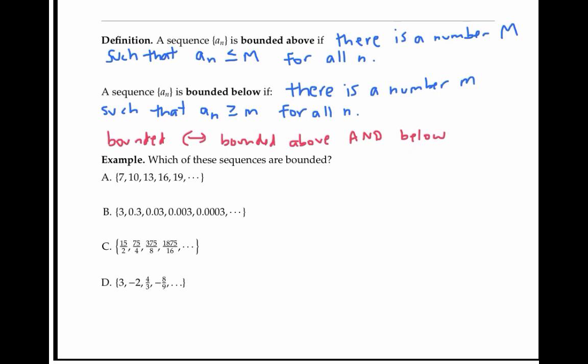The first sequence here is bounded below by seven, since all terms are bigger than or equal to seven. Of course, it's also bounded below by six or negative five — there are infinitely many lower bounds we can use. But this sequence is not bounded above, since the terms get arbitrarily large.